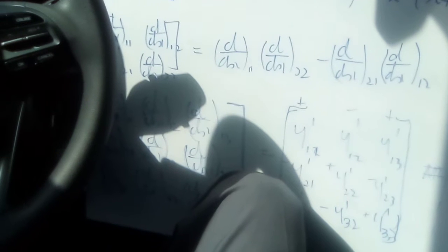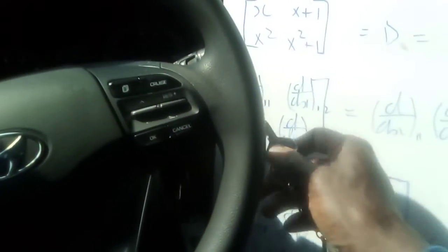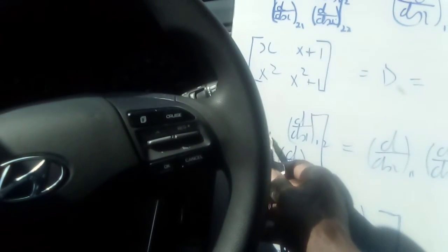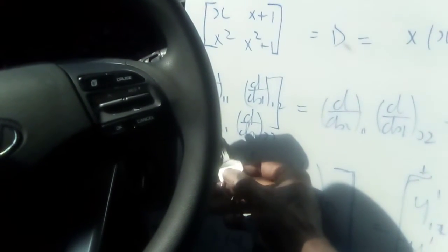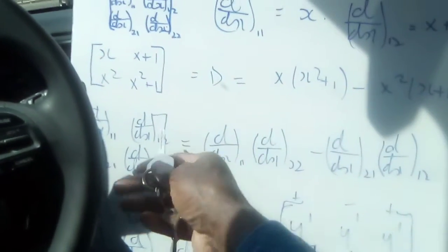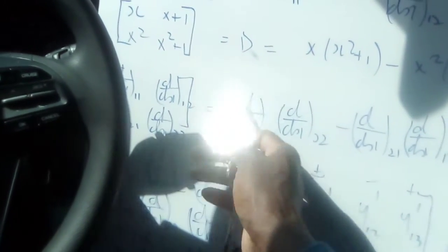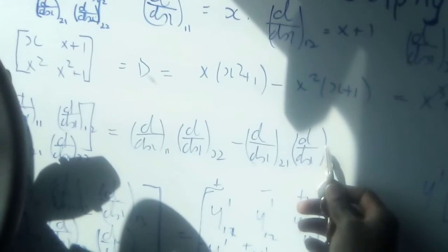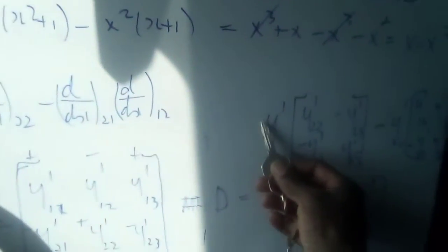So d by dx of r11 and d by dx of r12, and d by dx of r21 and d by dx of r22. This is just going through the process again, saying to find a determinant we multiply d by dx of r11 and d by dx of r22, and we subtract d by dx of r21 times d by dx of r12.